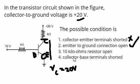Now, 10 kilo-ohms resistor open. If this resistor itself is open, collector will not have any voltage because voltage is applied at the other side of the resistor. So Vc is not 20 volts, this is gone. And then, collector-base terminals shorted.